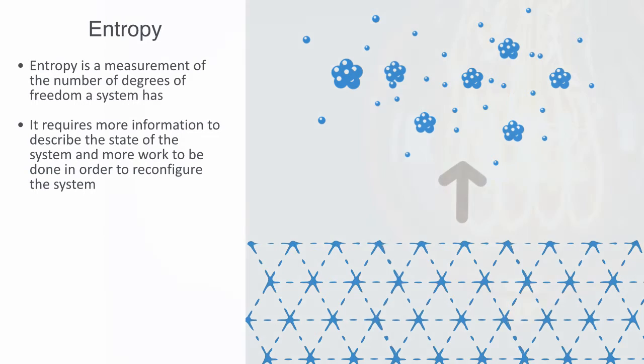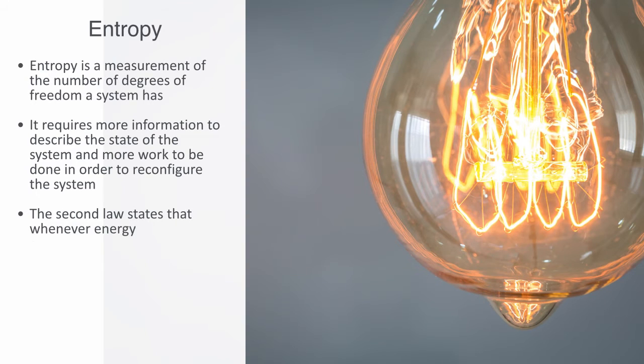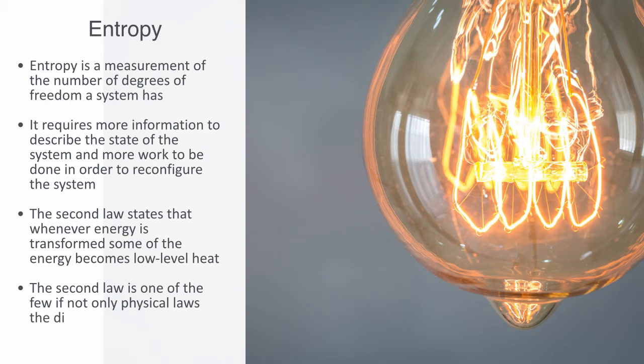The second law states that whenever energy is converted from one form to another, some of the energy becomes low-level heat. This means that the conversion of energy from one form to another is never 100% efficient. Some of the energy is lost as heat. The lost energy is still energy, but it's no longer high-level energy that can be used for work, such as moving things or fueling metabolic processes in plants and animals. Thus, the second law is one of the few, if not only physical laws, that differentiates between the directions of time.